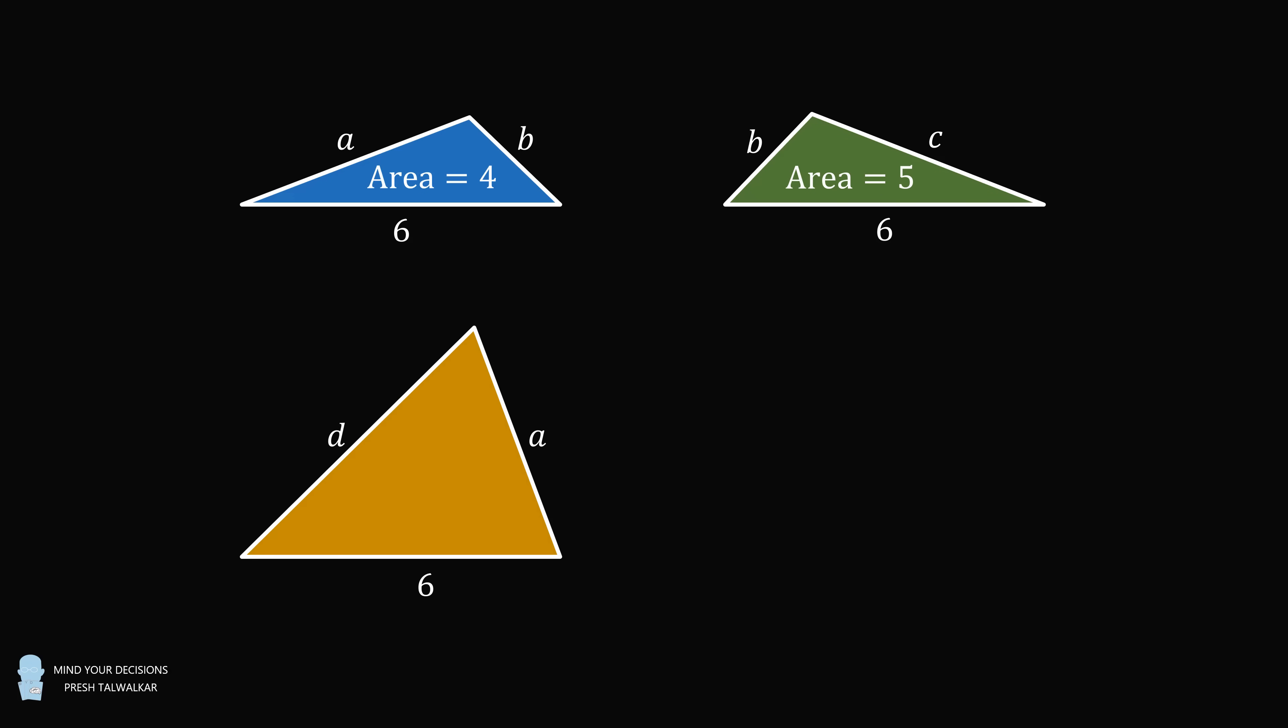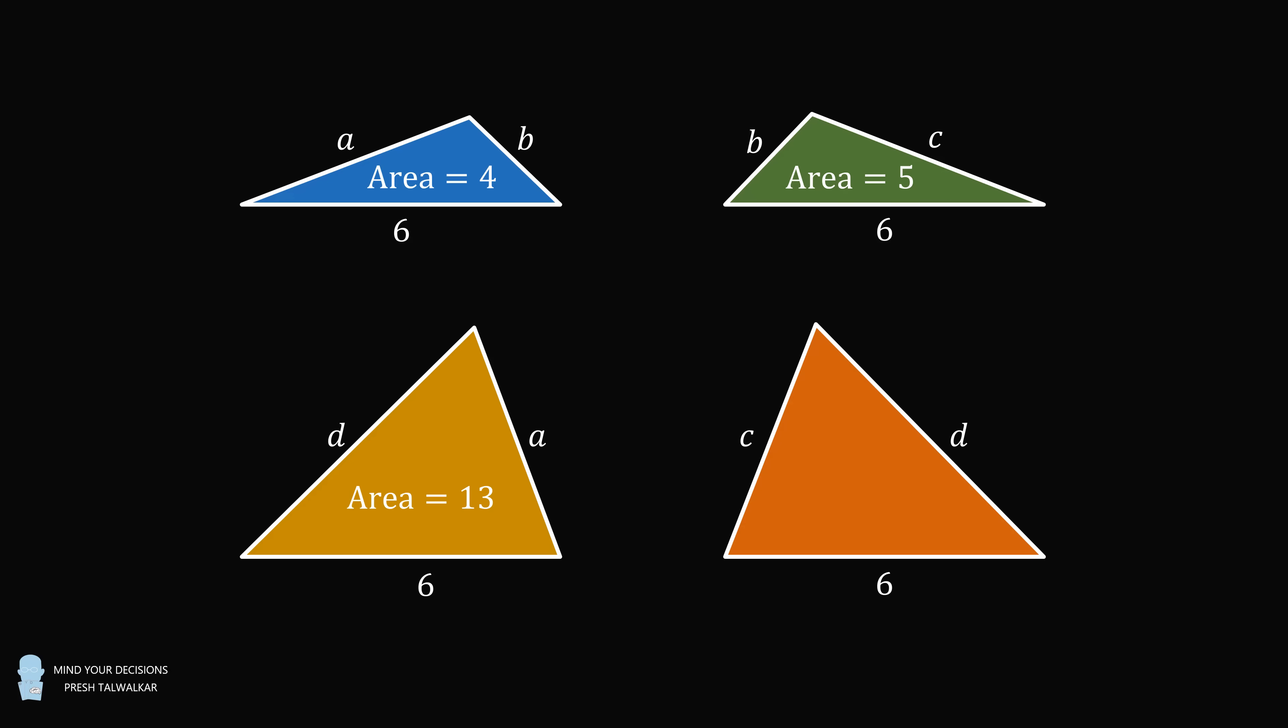A third triangle has sides D, A, and 6 and an area equal to 13. A fourth triangle has sides C, D, and 6. What is the area of this fourth triangle?